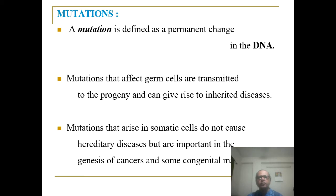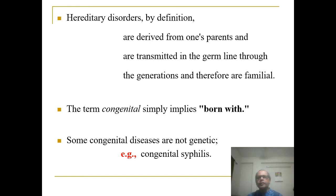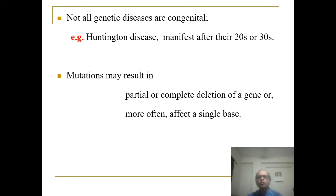Now we will go to mutation. What is mutation? Mutation is defined as a permanent change in the DNA. Mutations that affect germ cells are transmitted to the progeny and give rise to inherited disease. Mutations that arise in somatic cells do not cause hereditary disease but are important in the genesis of cancer and some congenital disease. Hereditary diseases are derived from one's parents and are transmitted in the germline through generations. The term congenital simply implies born with. Some congenital diseases are not genetic, and not all genetic diseases are congenital — for example, Huntington disease manifests after 20 or 30 years.